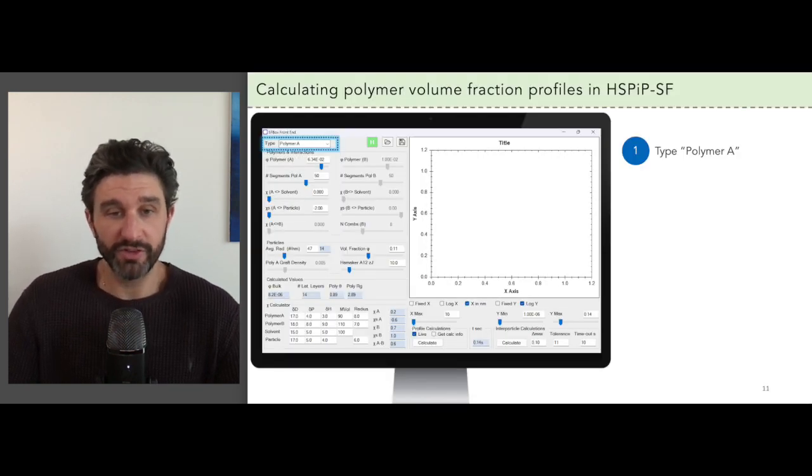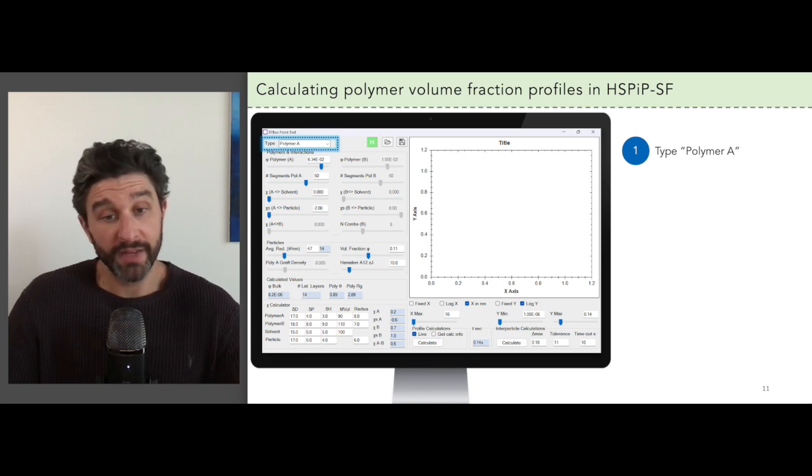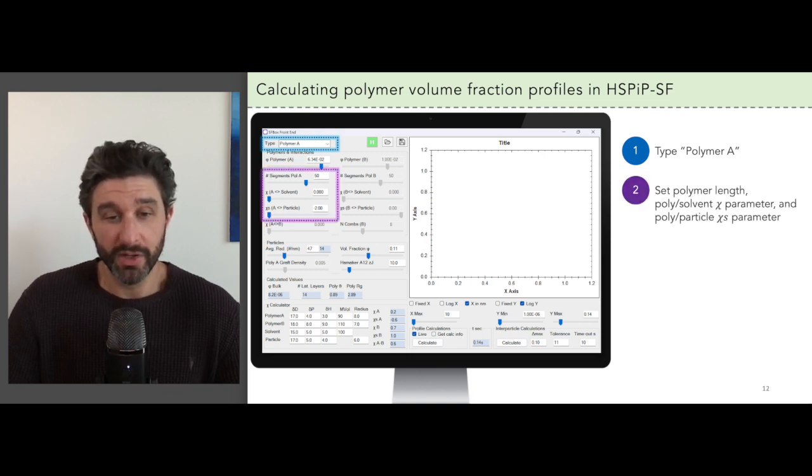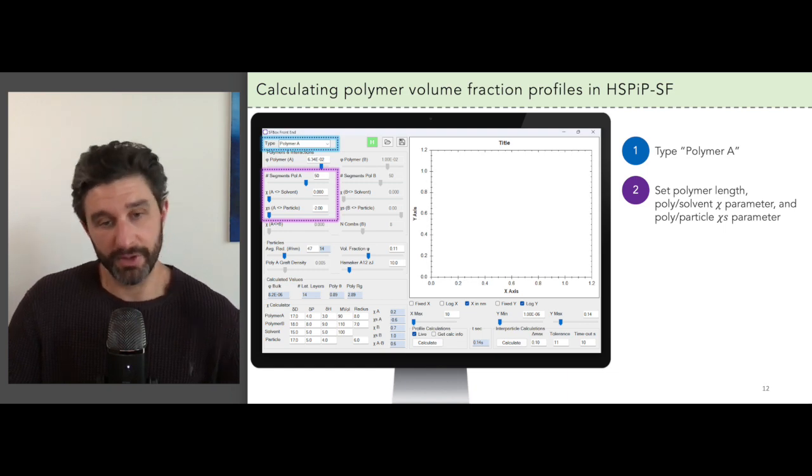The first step is to choose the polymer architecture. If you want to view the loops, trains, and tails then this is only provided for the homopolymer architecture. We then set the polymer length and the chi parameters for the polymer with the solvent and the particles.